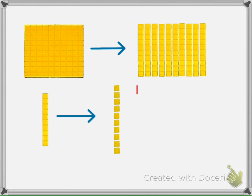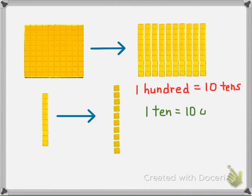Now if we can use smaller blocks to build larger blocks, it makes sense that we can break larger blocks into smaller blocks. So 100 can be broken up into 10 tens, and one 10 can be broken up into 10 ones. Notice both sides of the arrow equal the same amount — they just use different blocks to show the same number.